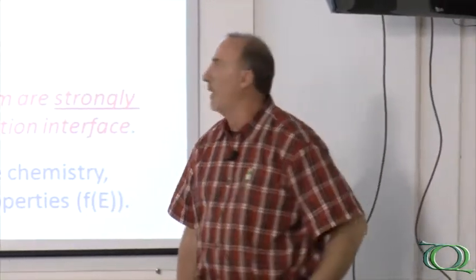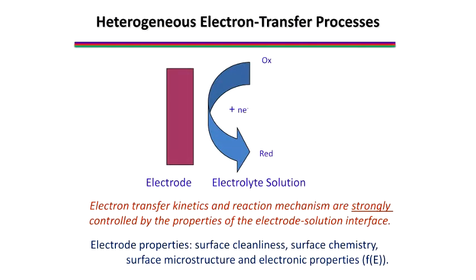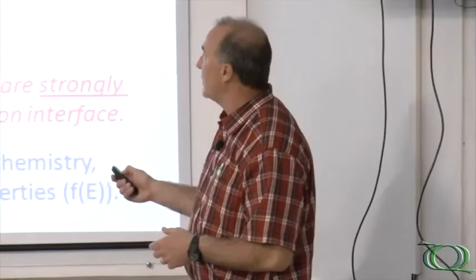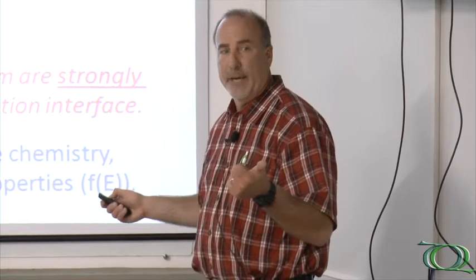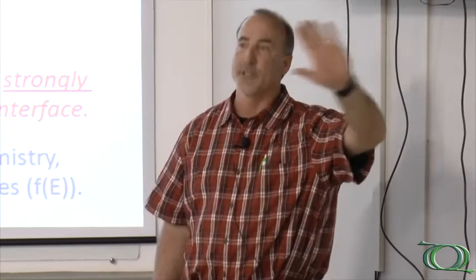I would start by talking just a little bit about fundamentals of electron transfer. In my group, we are very interested in how the properties of the electrode surface — chemistry, microstructure, electronic properties — affect the rates and kinetics of electron transfer at the interface. In any electrochemical system, it's a heterogeneous, solid-liquid interface, and the kinetics of this reaction — the oxidized form being converted to the reduced form — are very dependent upon the electrode material type.